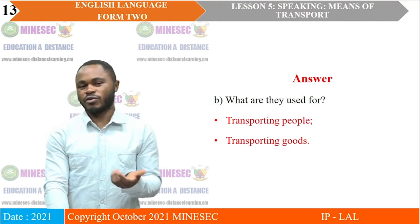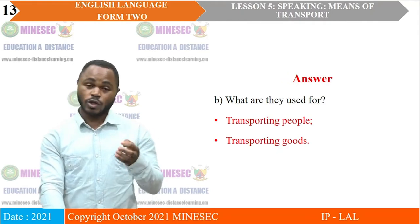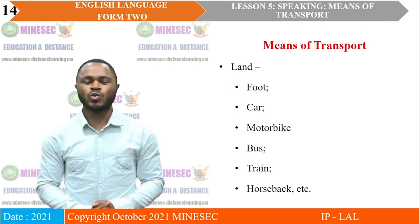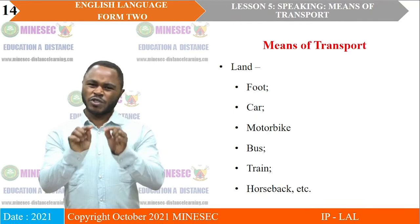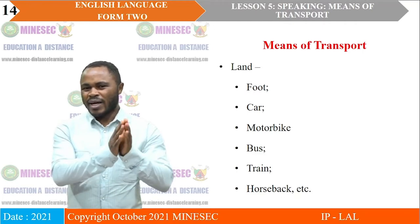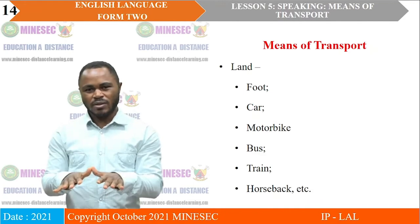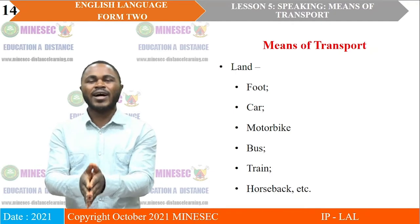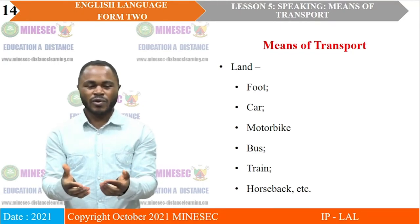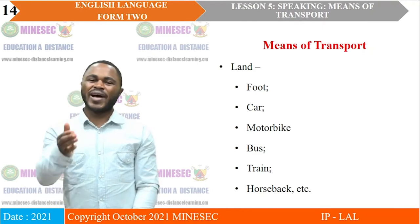In terms of what they are used for, obviously they are used for transporting people as passengers and for transporting goods — things meant to be sold and bought. This leads us to the means of transport. As those pictures suggest, we can group them very easily: those used on land — land transportation; those used on water — water transportation; and those used in the air — air transportation.